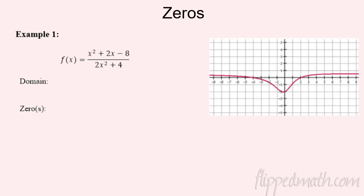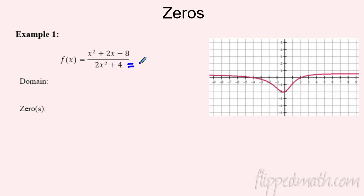Let's keep this train rolling with rational functions. We're going to be looking at zeros of rational functions, so let's start with Example 1. For domain, remember we have problems when the bottom equals zero — you're not allowed to divide by zero.